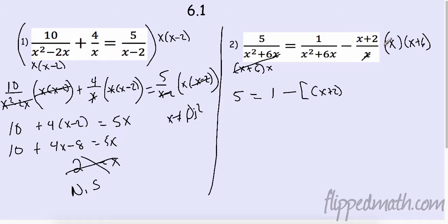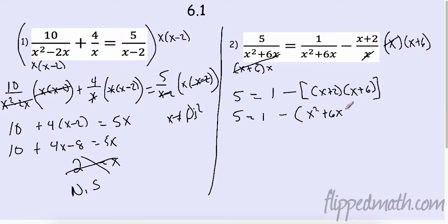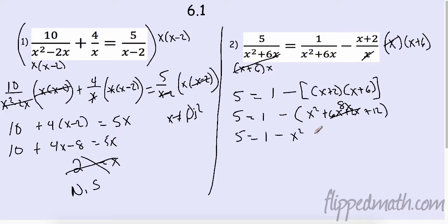Times — this x cancels — (x plus 6). Now, a huge mistake to remember: you have to distribute this negative after all the other work. So 1 minus x times x is x squared, x plus times 6 is 6x, 2 times x is 2x, and 2 times 6 is 12. So combining, this is really 8x — so we have 1 minus x squared minus 8x minus 12.